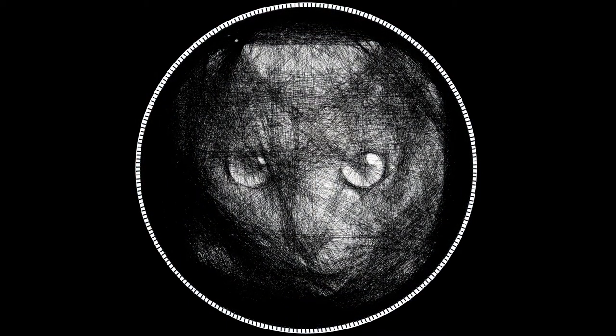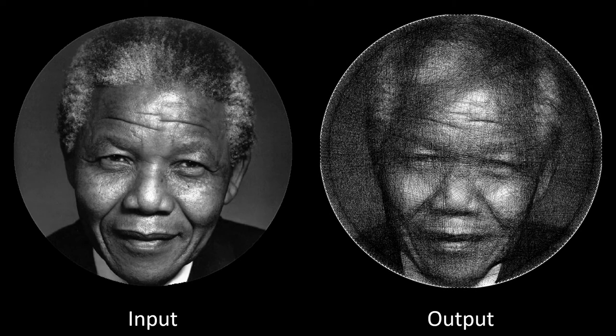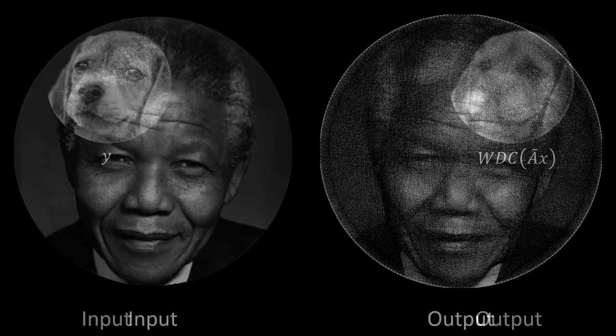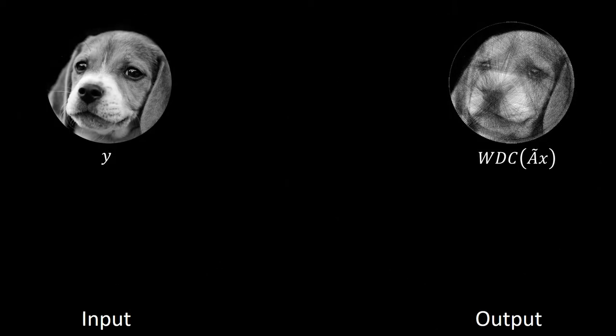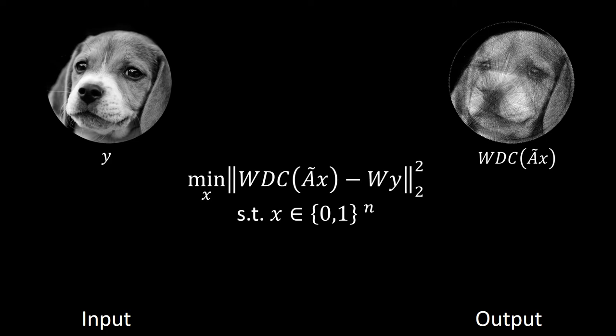artistic string images. Our method takes an ordinary grayscale picture as input and converts it into a connected graph of strings that best possibly resembles the input image. We formulate the problem as an optimization task and solve it using a binary least squares solver.